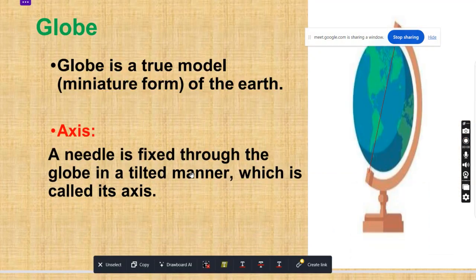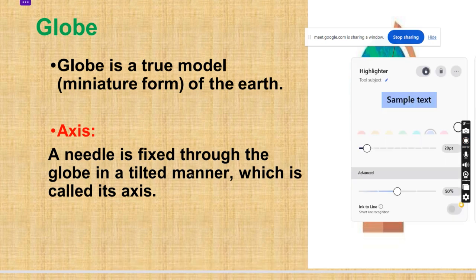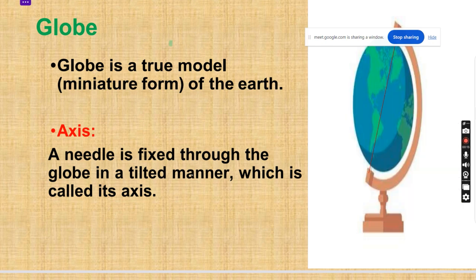So before knowing the chapter we need to know something about our globe. From the draw board if I am selecting this highlighter then it will be helpful for you to understand it in a better way. In this chapter there is written globe. What is globe?